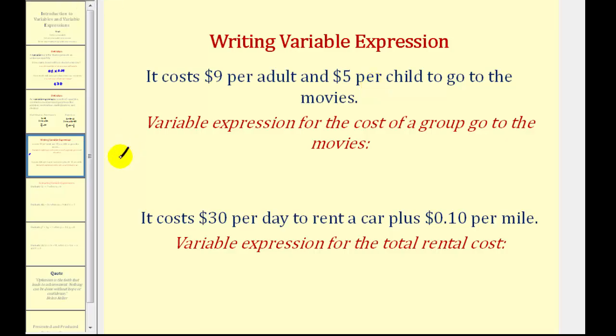So if we let x equal the number of adults attending, and y equal the number of children attending, the variable expression to represent the total cost for the group to attend the movie would be 9x plus 5y.